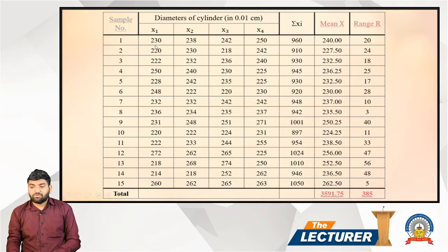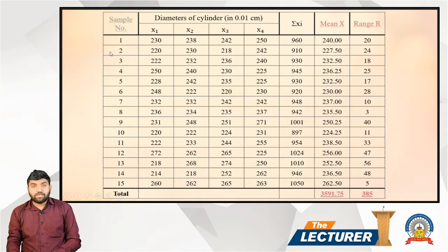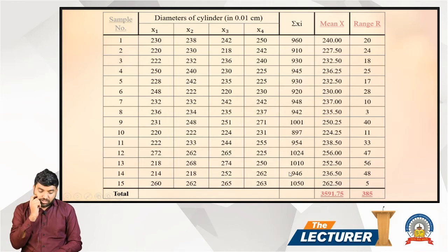To recap the method: for the first sample, we have 2.32, 2.38, 2.42, 2.50, giving total 9.60. Divided by 4 gives mean of 2.40. We then compute the total sigma X-bar and total range sigma R across all 15 samples.